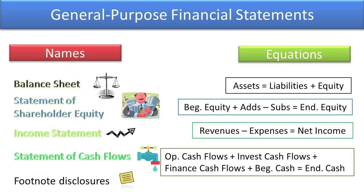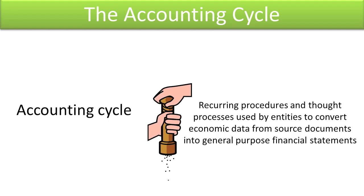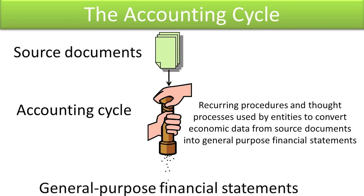In previous topics, we studied the general purpose financial statements, their equations, and how the financial statements can help external users make debt and equity financing decisions. In this topic, I will discuss the accounting cycle, which is a set of recurring procedures and thought processes used by entities to convert economic data from source documents into general purpose financial statements.